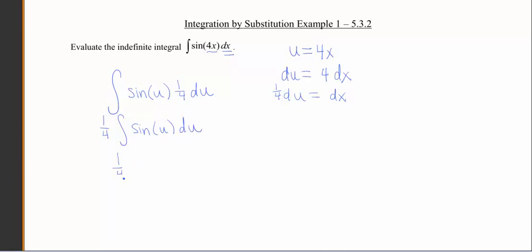So my 1 fourth needs to come along. I've got negative cosine u. And then, of course, since this is an indefinite integral, we always want to put our plus c on there to generalize this, and know that we've got some constant hanging around.